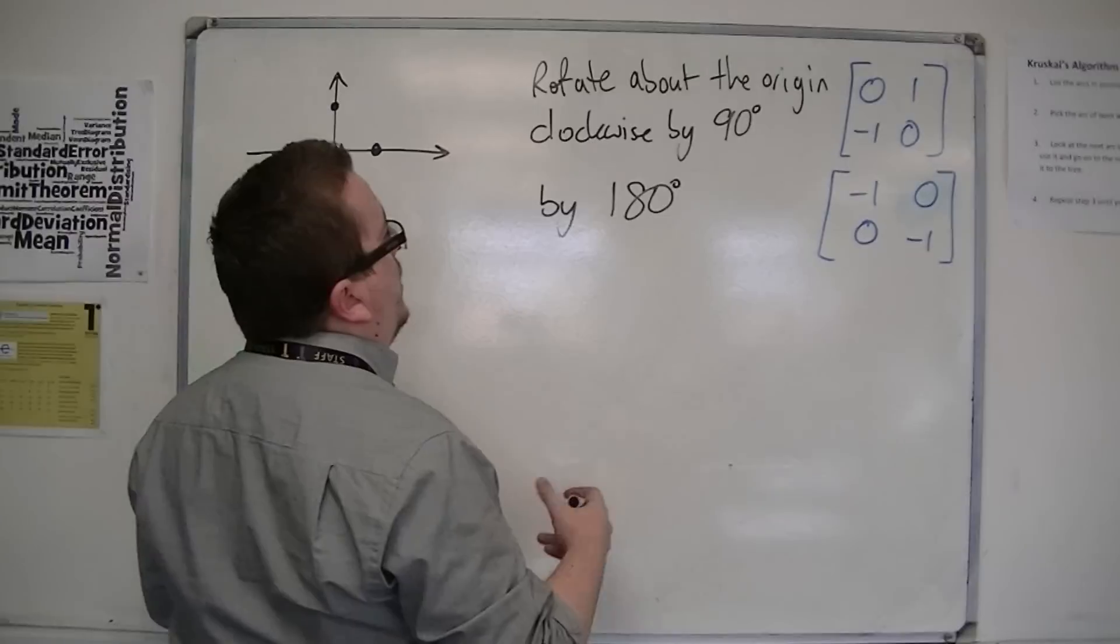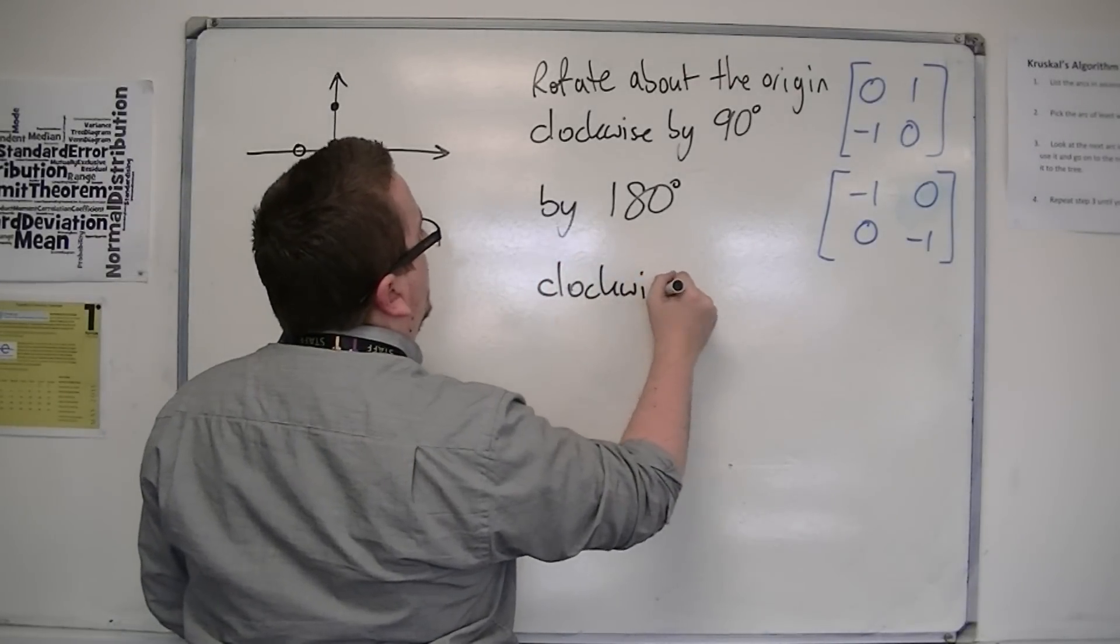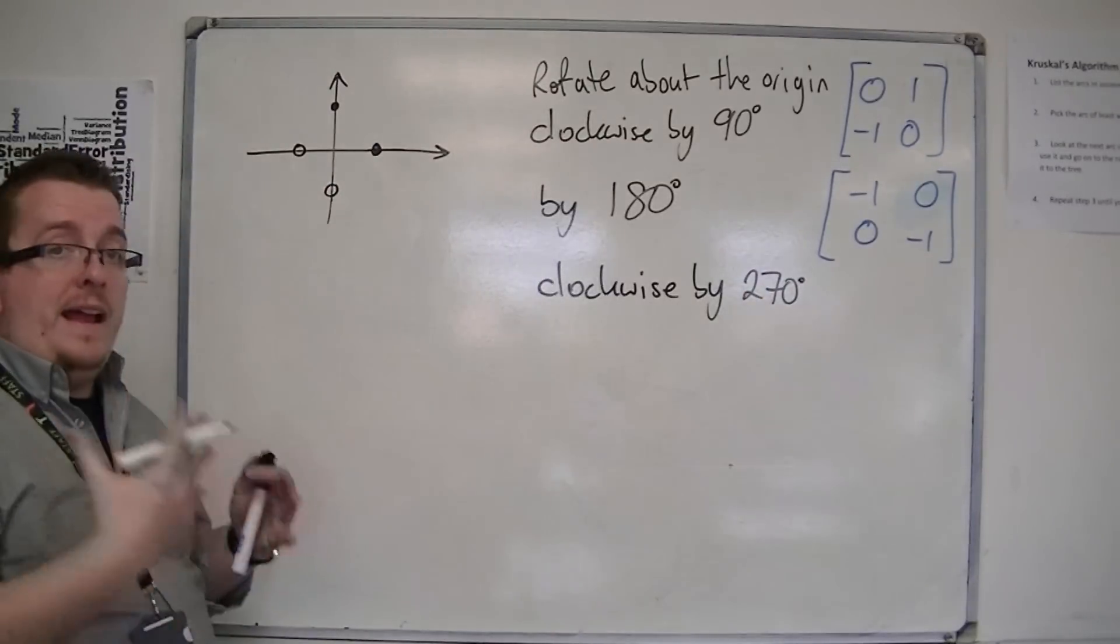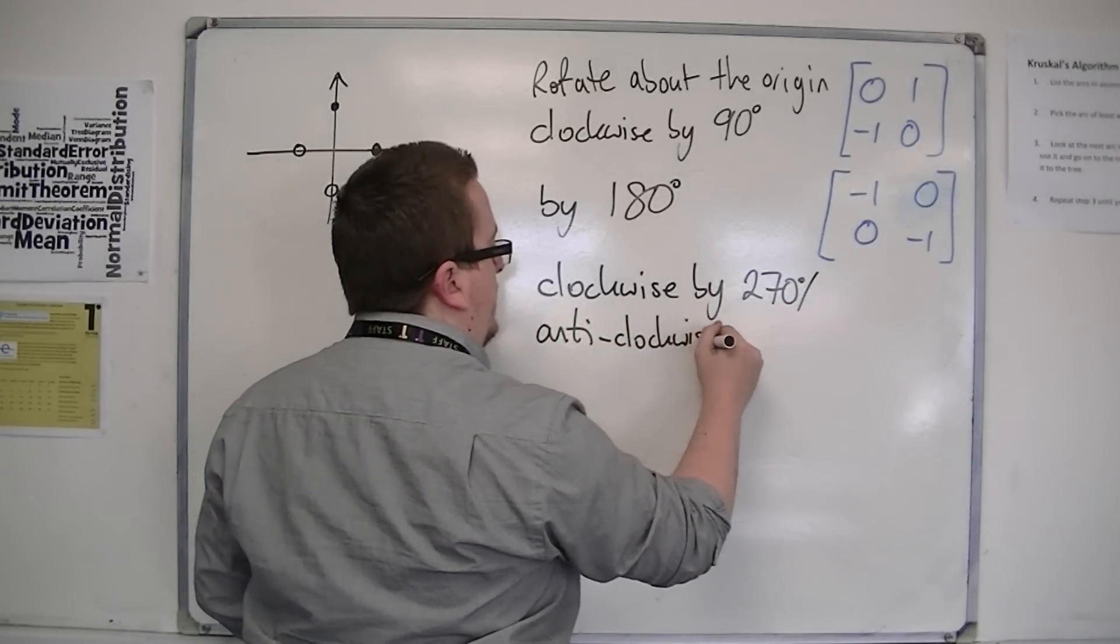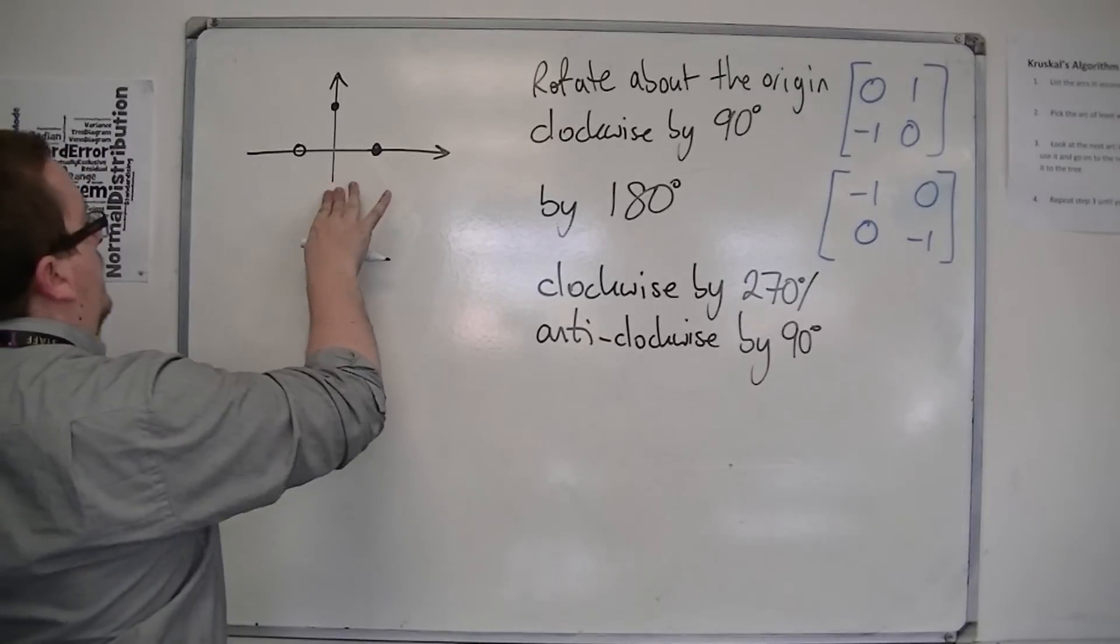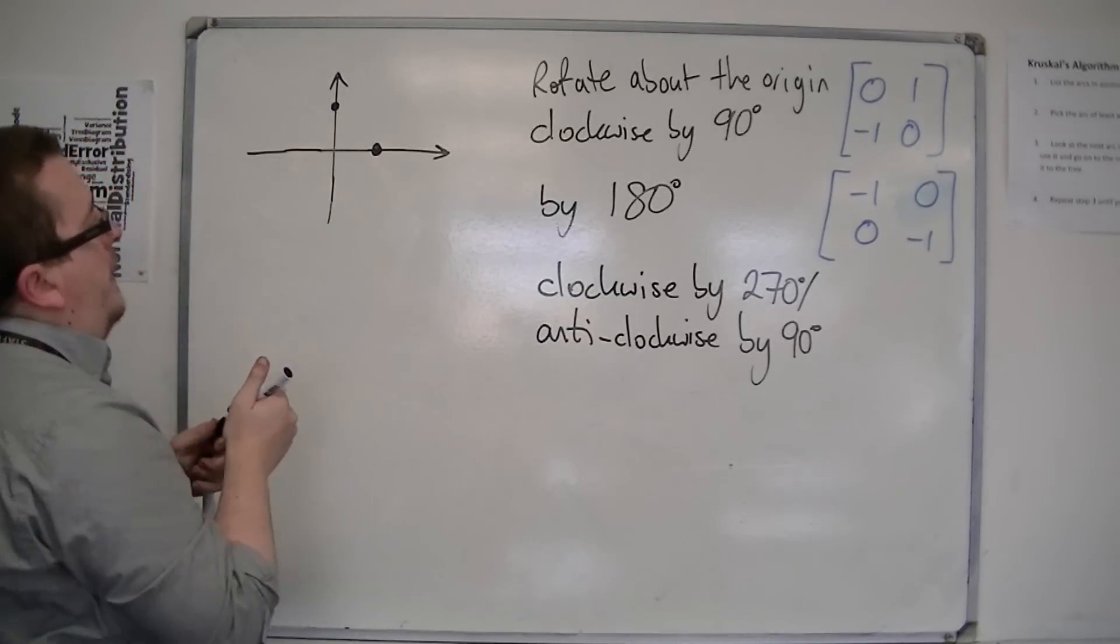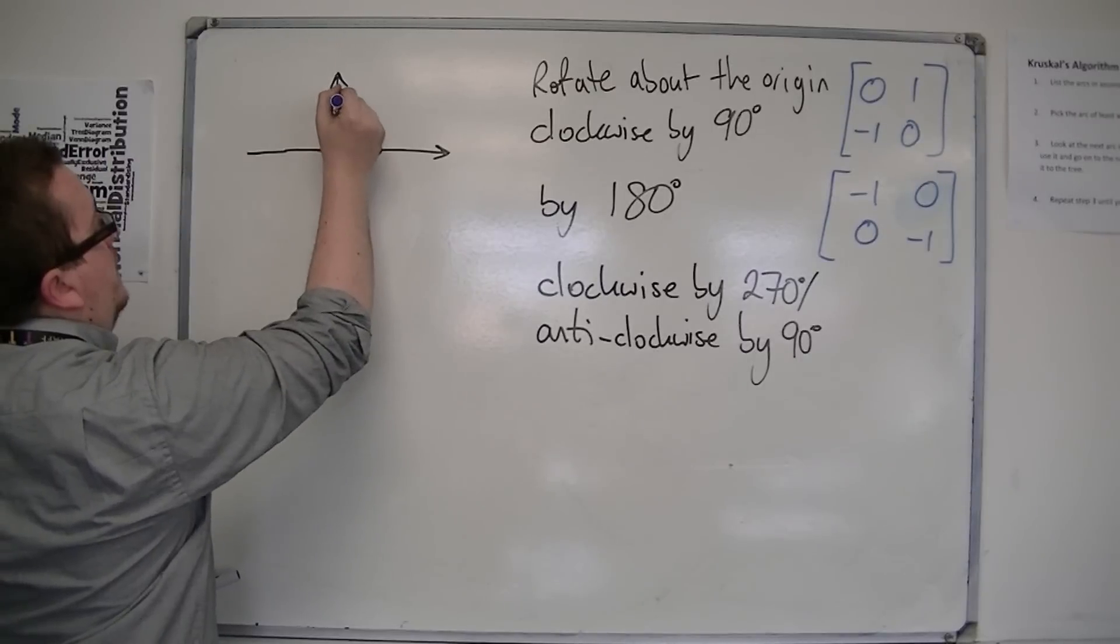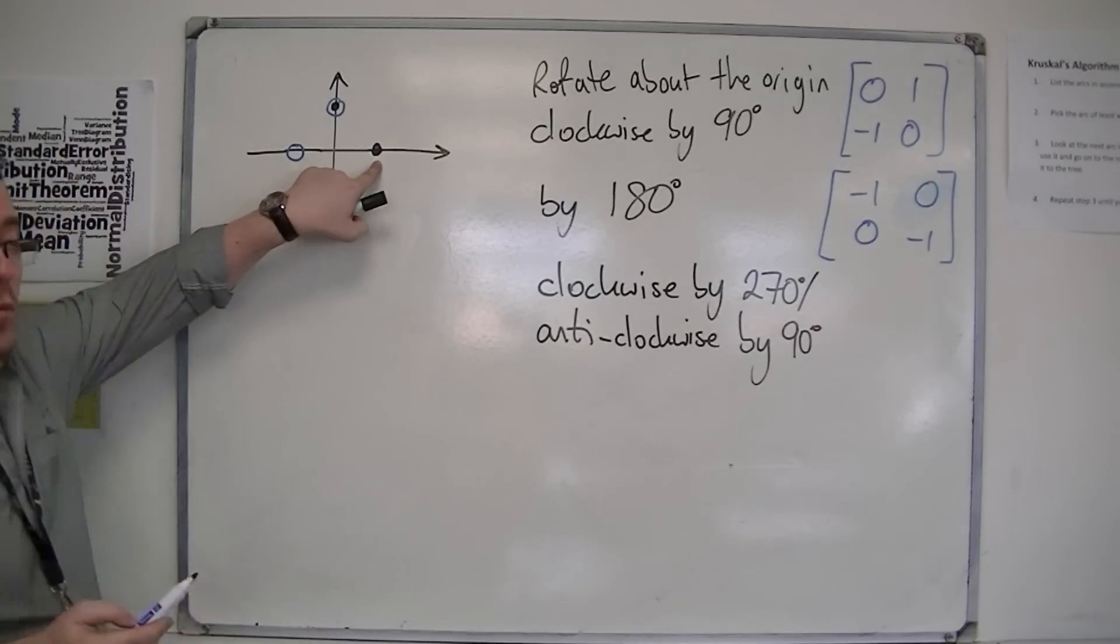So if I wanted to go one further, and I wanted to go clockwise by 270 degrees, or you could see it as anticlockwise, or counterclockwise if you're American, by 90 degrees, then what's going to happen is that one zero will rotate round so that it is now there, and zero one will rotate round so it is now there.